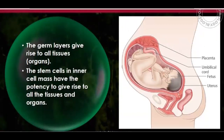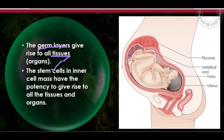The germ layers give rise to all tissues and organs of the body. Some organs are ectodermal in origin, some endodermal, and some mesodermal. Stem cells in the inner cell mass have the potential to give rise to all tissues and organs.